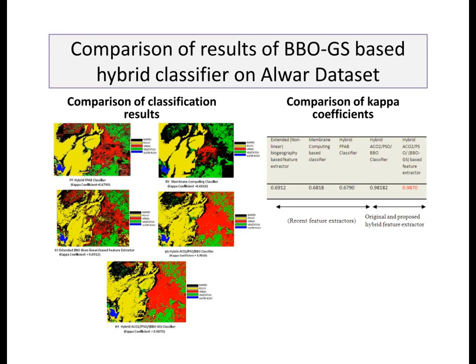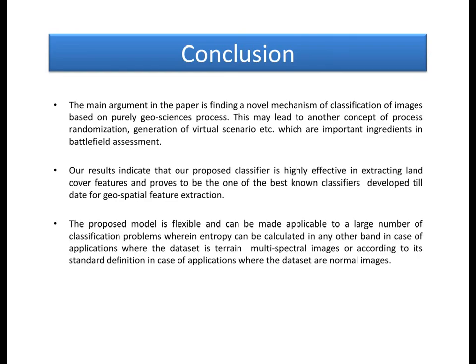From the results obtained, it can be observed that our new BBO-GS based hybrid classifier achieves the highest classification accuracy of 98.7 percent and outperforms the original hybrid feature extractor as well as the other recent feature extractors compared and developed till date for geospatial feature extraction.